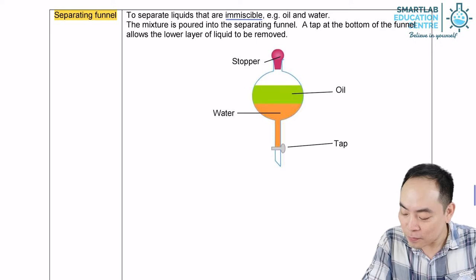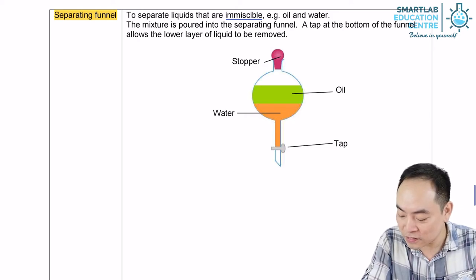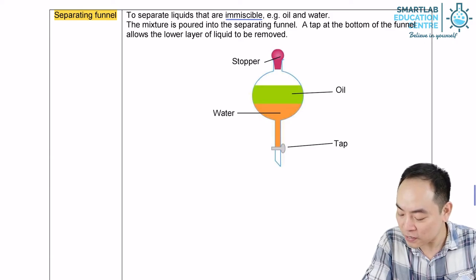To separate the mixture of oil and water, pour the mixture into the separating funnel. Place a clean beaker below the separating funnel. Open the tap of the funnel to allow the bottom water layer to drain into the beaker.